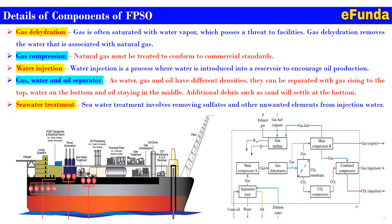Now in these facilities, one can see the exact location of each component in the FPSO and how they reside on a ship. Starting with the heli-deck, living quarters, HVAC equipment and electrical room including water header, steam generator, power generation, seawater treatment, oil processing including crude oil header, test header, chemical plant including chemical injection header, gas treatment, gas compression, knockout drum, CO2 membrane and H2S removal — and finally reaching the flare of the FPSO system.